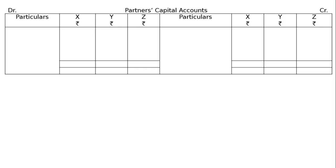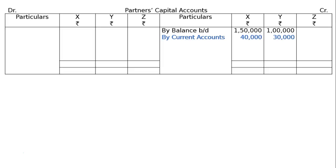Next one is partners capital accounts, both debit and credit side, for X, Y, Z with rupee symbols. First line is balance brought down: Rs. 1,50,000 and Rs. 1,00,000. E part: present fixed capital method is to be converted into fluctuating capital method. This will be a fluctuating capital account, meaning the current account balances will be transferred to this account — by current accounts, Rs. 40,000 and Rs. 30,000.